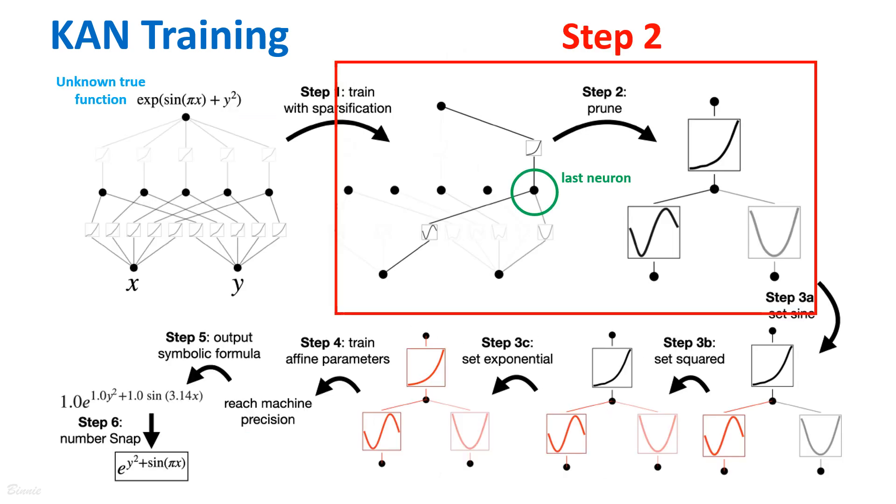Moving on to step two, pruning. In the context of KAN, automatic pruning techniques are employed to discard all hidden neurons except the last one. Through this process, it aims to remove unnecessary components from the network. Interestingly, during the pruning phase, we can observe that the activation functions associated with the remaining neurons appear to be known symbolic functions. This shows the interpretability of KAN as the activation functions can be expressed in symbolic form.